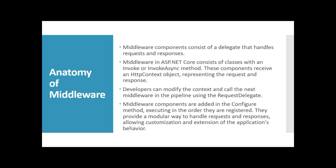Let's talk about the anatomy of middleware. A middleware component consists of a delegate that handles request and response. In ASP.NET Core, a middleware consists of classes with an Invoke or InvokeAsync method. These components receive an HTTP context object representing the request and response. Developers can modify the context and call the next middleware in the pipeline using the request delegate. Middleware components are added in the Configure method, executing in the order they are registered, providing a modular way to handle requests and responses.